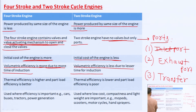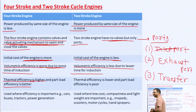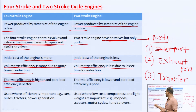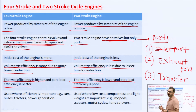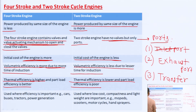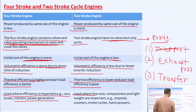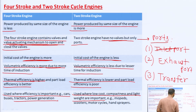Regarding thermal efficiency: the four-stroke engine has higher thermal efficiency, and even at part load — say 50 or 60 percent load — the thermal efficiency is better for the four-stroke engine. In the case of the two-stroke engine, thermal efficiency is lower and part-load efficiency is poor compared to the four-stroke engine. From an application standpoint, four-stroke engines are used where efficiency is important — for example, cars, buses, tractors, power generation, etc. Two-stroke engines are used where low cost, compactness, and light weight are important — for example, mopeds, scooters, motorcycles, hand sprayers, etc.